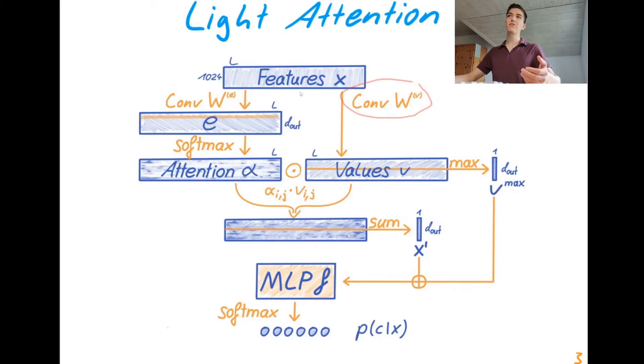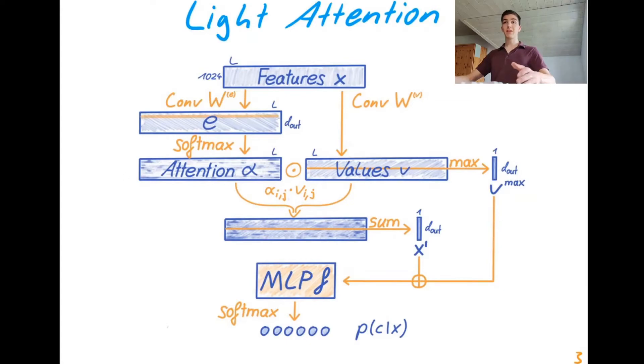Then we just have a second convolution also running over our input features to produce our values over here. We then just take the element-wise product here of our attention and our values to produce this representation down here, of which we then just take the sum over the length dimension. So really, we just end up with a weighted sum where the weights are given by these dynamically constructed attention values. And after the sum, we end up with a fixed size representation down here and we concatenate this with additionally taking the maximum over the length dimension of the values, just feed this to our MLP down here and end up with our final classification scores.